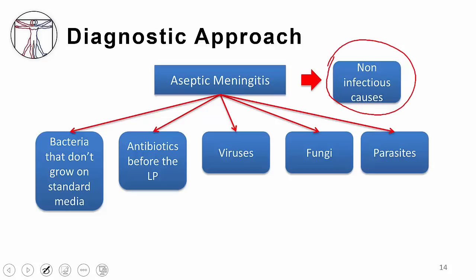There are non-infectious causes of aseptic meningitis, but for infectious causes, I think of five broad categories. First, bacteria that won't grow on standard media can cause aseptic meningitis, like Mycobacterium tuberculosis. Second, if the patient received antibiotics before the lumbar puncture, that can sterilize the cultures and make it appear like aseptic meningitis. Viruses are the most common cause of aseptic meningitis, and fungi and parasites also cause aseptic meningitis, usually in immunocompromised hosts.